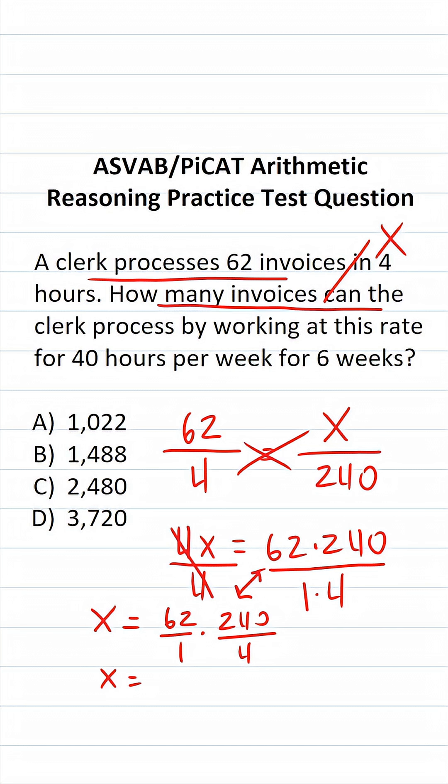What is 24 divided by 4? It's 6. So what is 240 divided by 4? It's going to be 60. So this becomes 62 over 1. 62 divided by 1 is just 62 times 60.